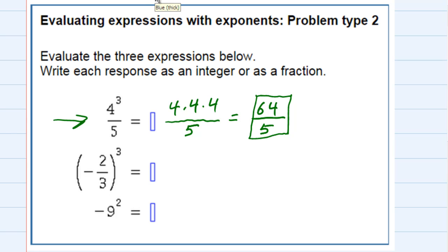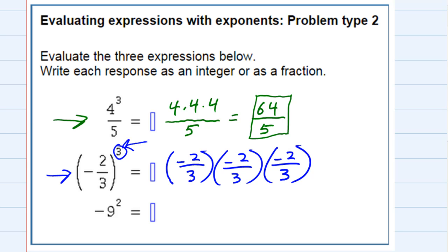And then move on to the second expression. For this one, it does have parentheses. So the entire thing is being raised to the third power. So I'm going to use those parentheses and write negative 2 thirds times negative 2 thirds times one more negative 2 thirds. And again, I've got three of them because it's raised to the third power.